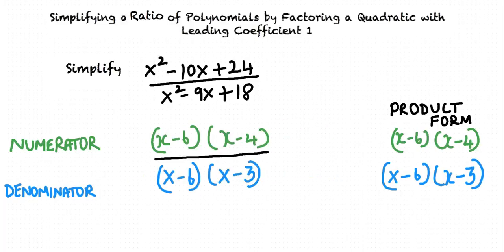Expressing the numerator and denominator as a product of their factors, we get x minus 6 times x minus 4 over x minus 6 times x minus 3. Cancelling out the common term x minus 6, we end up with x minus 4 over x minus 3.